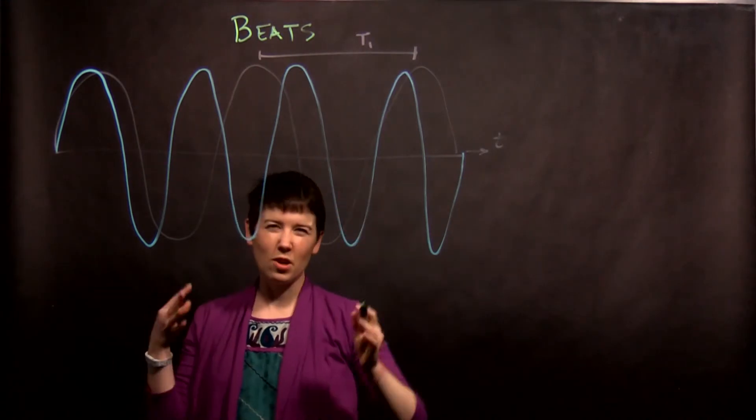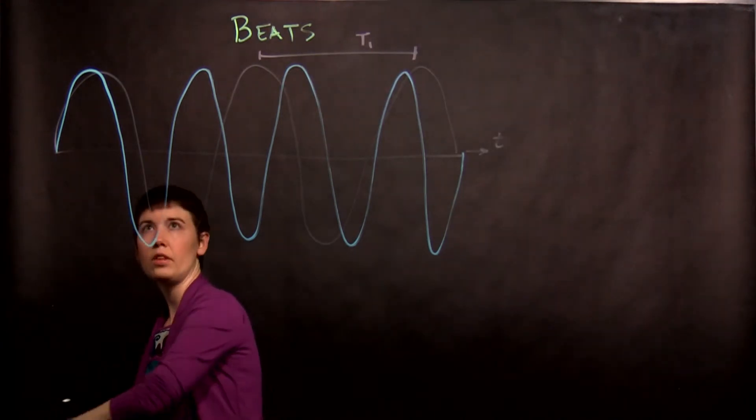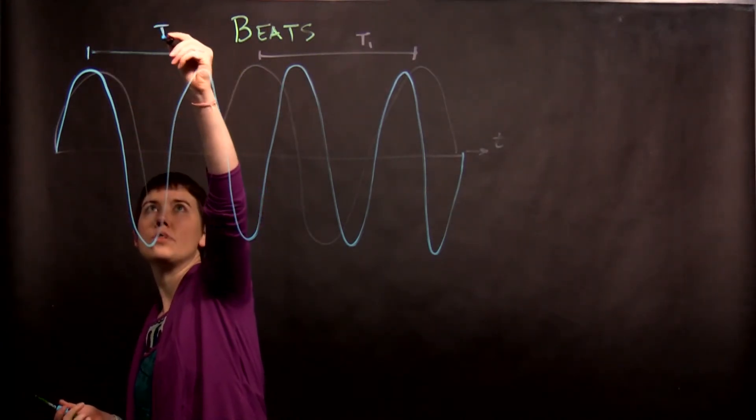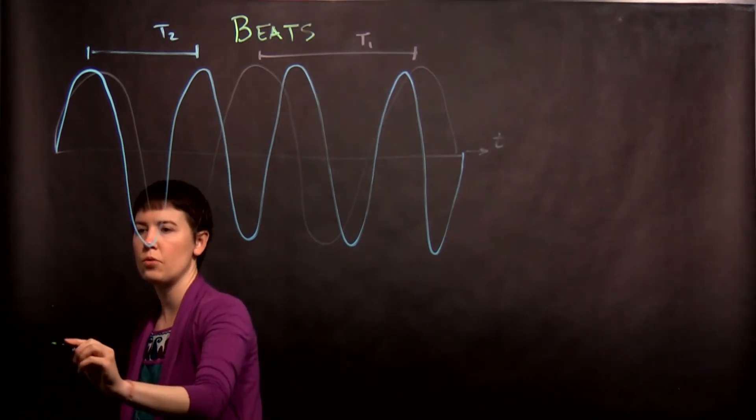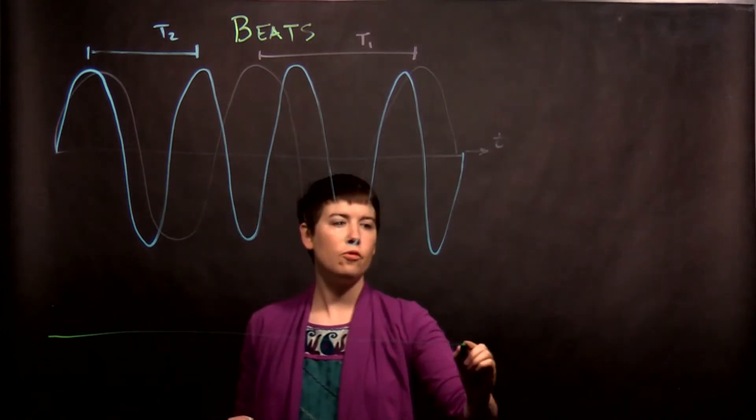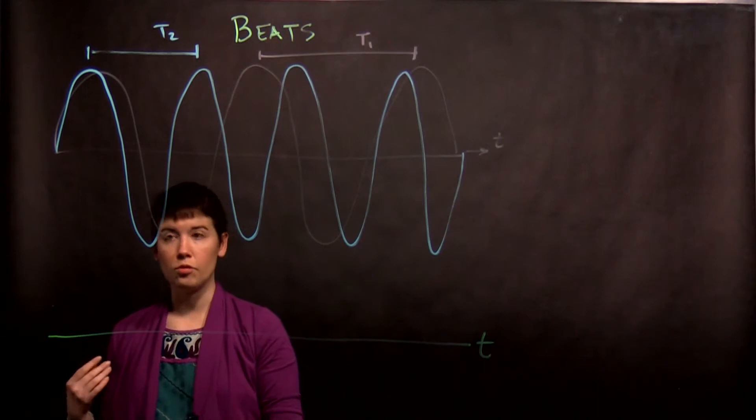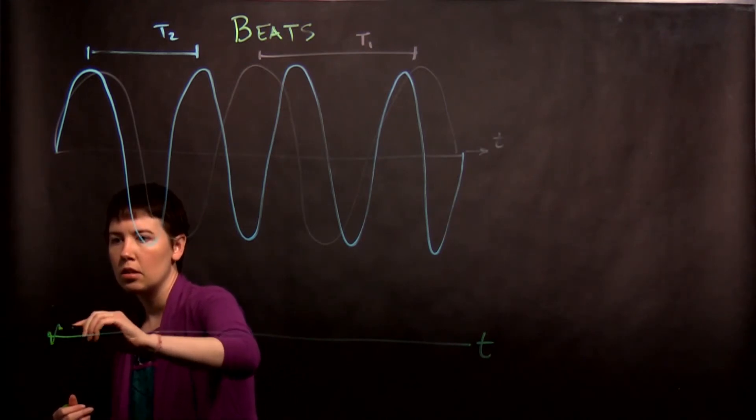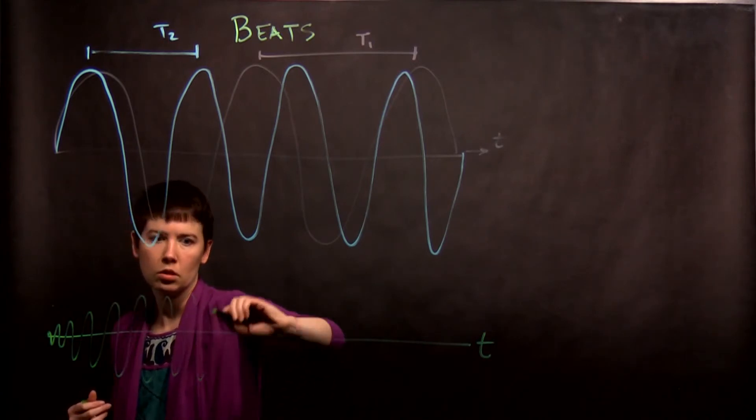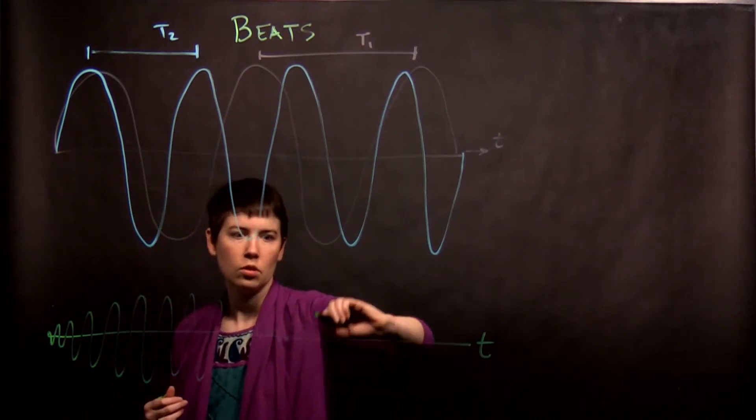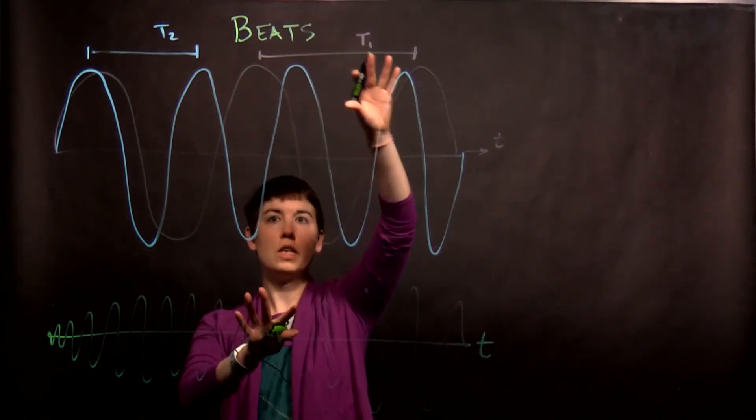So it's hard to draw this exactly but the idea being if we then, so here this is T2. Not necessarily on the same scale because I think it's too hard to see, but if we had the real situation of the 440 and the 441 Hertz what's happening is you're getting this kind of increase and then a decrease and then an increase and so on.